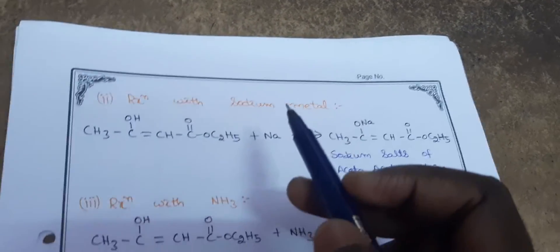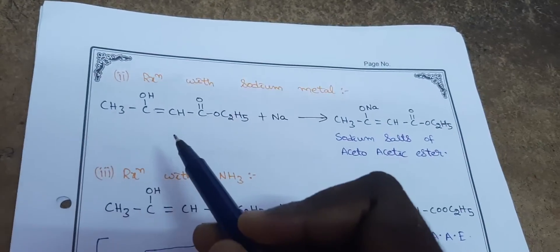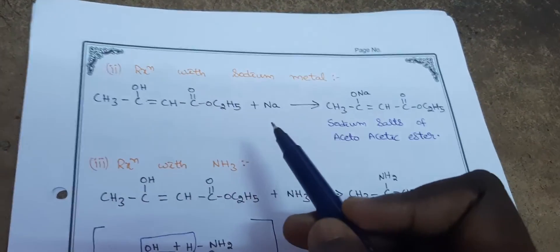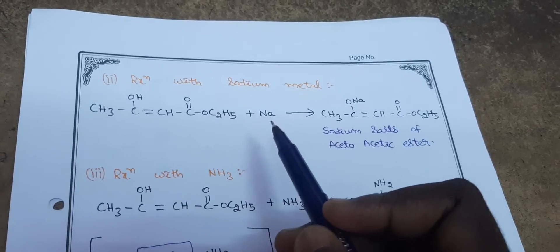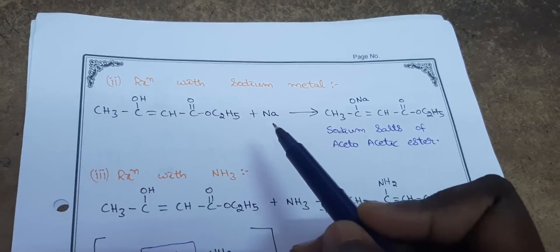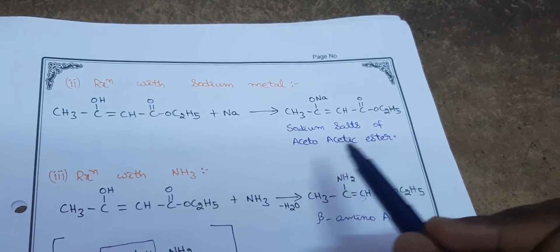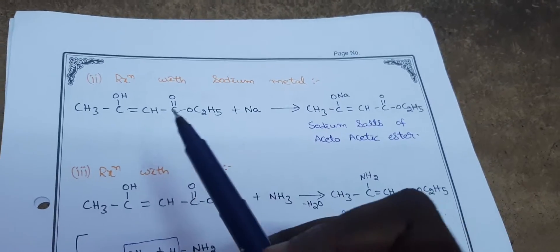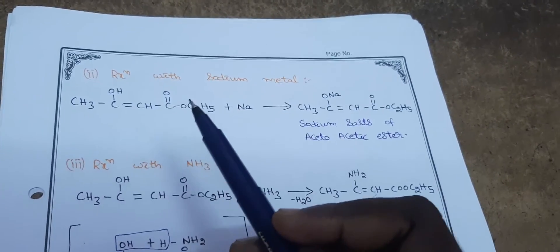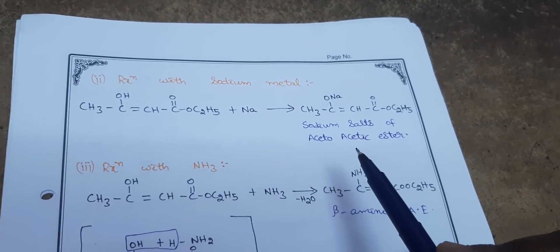Next, reaction with sodium metal. This also involves the enol form of acetoacetic ester. As before, the hydrogen on the OH group is replaced by sodium metal, and the product formed is the sodium salt of acetoacetic ester.